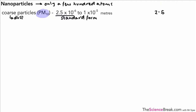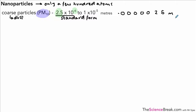We use standard form when talking about very large or very small numbers. Taking 2.5 × 10⁻⁶, we can show how big it is in meters: we take 2.5 and move the decimal point six places to the left because of the 10⁻⁶, adding zeros, giving us 0.0000025 meters. Standard form is useful to represent very small numbers in an abbreviated way.